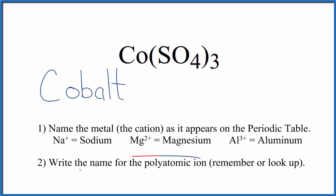Next, we write the name for the polyatomic ion. So you either remember that SO4 is the sulfate ion, or if you're allowed, you look it up, lowercase s. So far, we have the name cobalt sulfate for this Co(SO4)3.